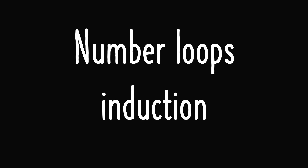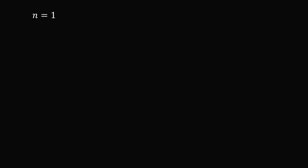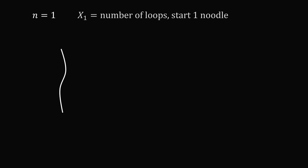Let's get started with the first problem of finding the expected number of loops, and I'm going to show a solution that uses mathematical induction. Let's work out the simple case where n equals 1 — we just have one noodle. I'll set up some notation: let x1 be a random variable denoting the number of loops you will make when you start with one noodle. When we select two ends, there are only two ends we can pick, so necessarily we're going to create one loop. The expected number of loops E[x1] is equal to 1.